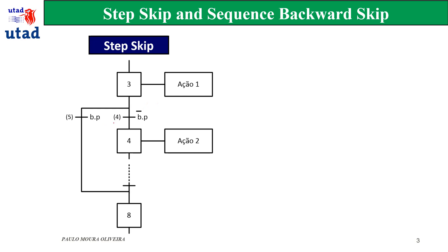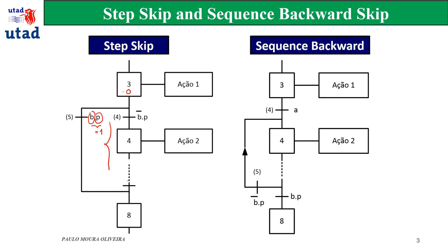The step skip is this direction where we have one decision. If step 3 is active here, we have a decision that depends on the variable B and variable P1. If the logical AND is equal to 1, we have a skip of these sequences of steps and we jump to this point. The step skip is a kind of jump.